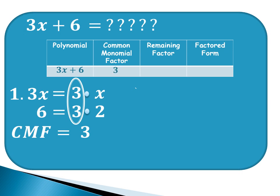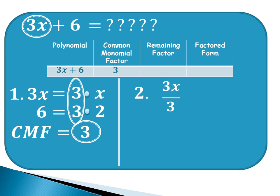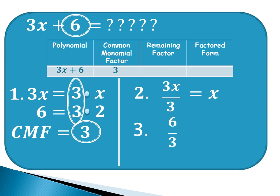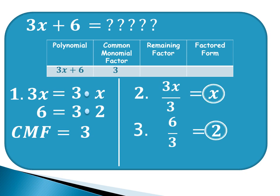We will write 3 here. Next, we are going to get the remaining factor. To get the remaining factor, we will divide each term of the given by the CMF. We divide the first term: 3x divided by 3 is equal to x. Then we divide the second term: 6 divided by 3 is equal to 2. Our remaining factor comes from x and 2 combined, giving us x plus 2. Therefore, the remaining factor is x plus 2.